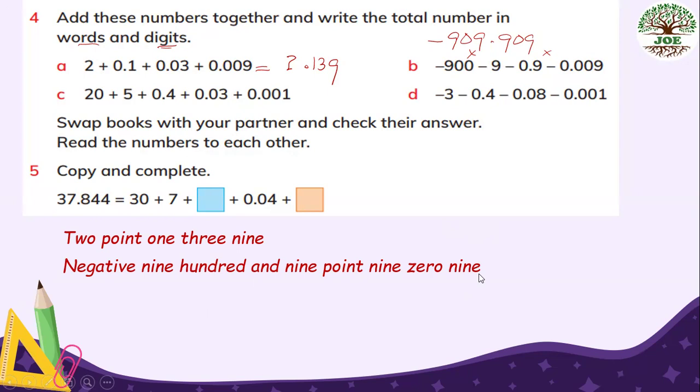Part C, 25. We add in order. So our number is 25.431. And in words, 25.431.